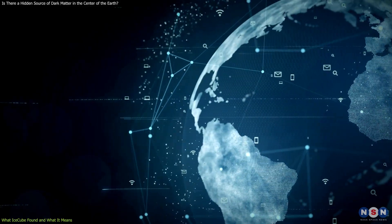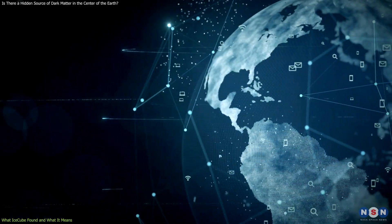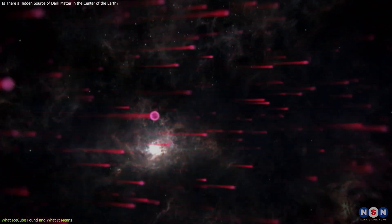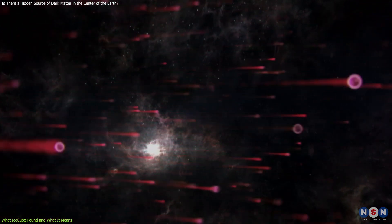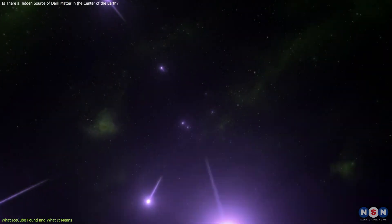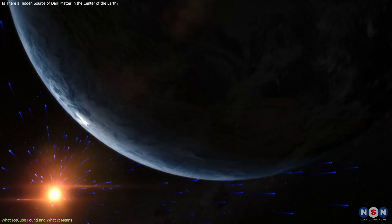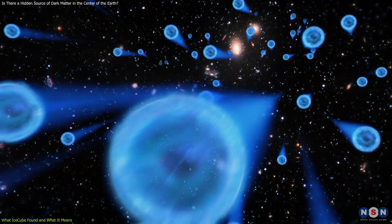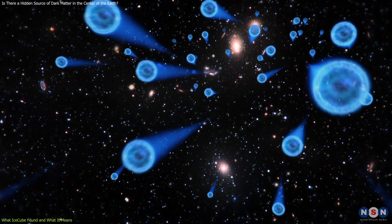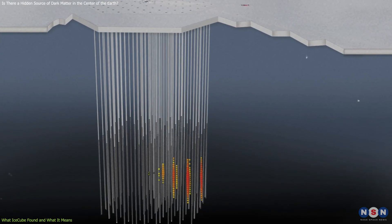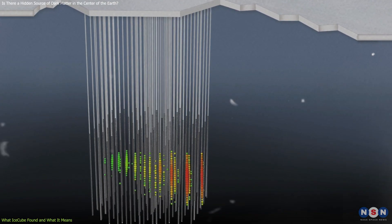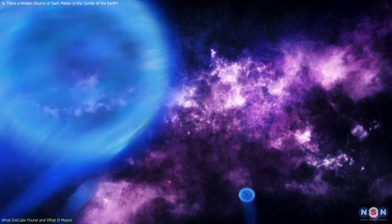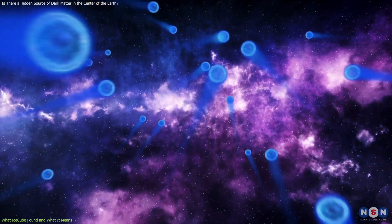After analyzing seven years of data from 2010 to 2017, IceCube reported that they found six neutrino events that matched their criteria for dark matter annihilation. These events had energies between 30 and 200 TeV and came from within 5 degrees of the center of the Earth. This is a very rare and unusual occurrence, as IceCube expected to see only about one event like this in seven years. This means that there could be something interesting going on in the center of the Earth, something that produces more neutrinos than expected.